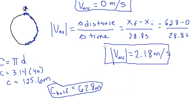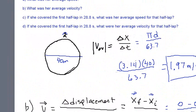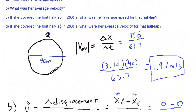This is for part C — the average speed for half the circle is 2.18 meters per second. In the next video, we're going to find part D: if she covered the first half lap in 28.8 seconds, what was her average velocity for that half lap? We'll see you next time. Thank you.